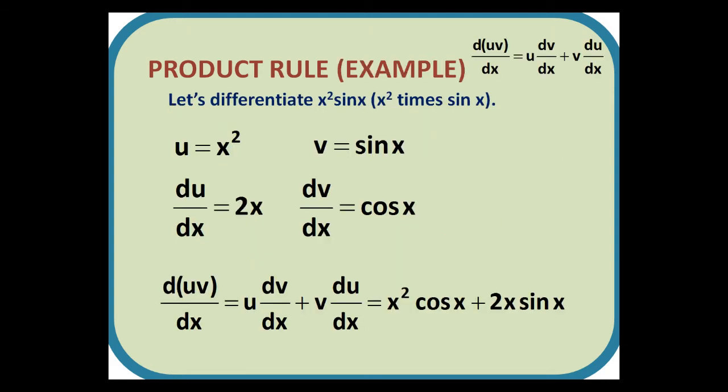Let's do an example. We shall differentiate x squared sin x. If u equals x squared, then du by dx equals 2x. If v equals sin x, then dv by dx equals cos x. Substituting in the formula gives us a final answer of x squared cos x plus 2x sin x.